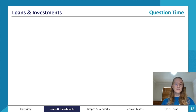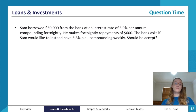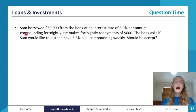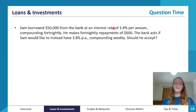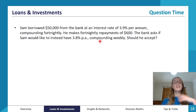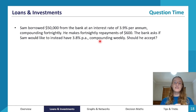Let's look at an example. Sam borrowed $50,000 at 3.9% per annum, compounding fortnightly — so 26 compounds per year — with fortnightly repayments of $600. Since it's a loan, he wants the cheaper option. The bank offers him 3.8% per annum compounding weekly (52 compounds per year) — a lower rate but more frequent compounding. Should he accept this offer or stick with his current arrangement?